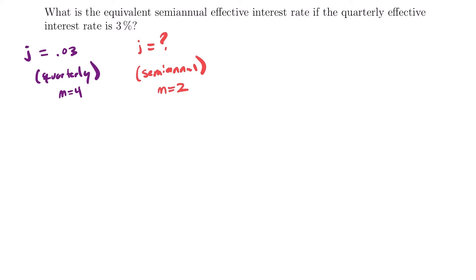How are we going to go from a quarterly rate to a semi-annual rate? There are actually two different ways we could do this, and I'm going to show you both. The first method is a little lengthy, and the second method will save you a lot of time if you really understand the concept. If not, the first method is totally fine and will only cost you maybe a few extra seconds.